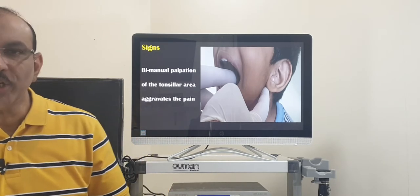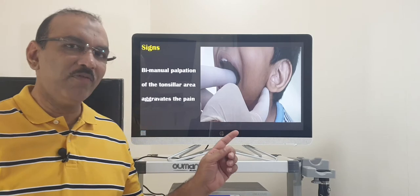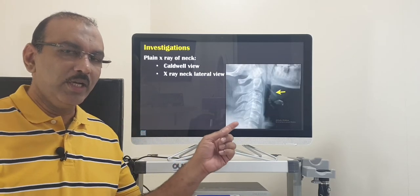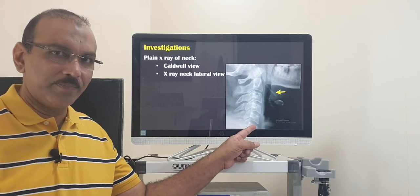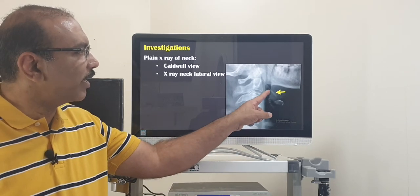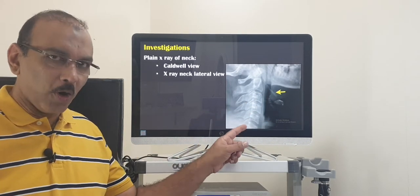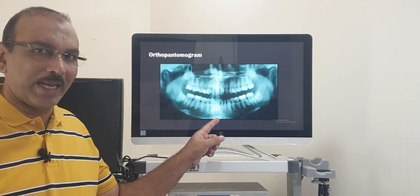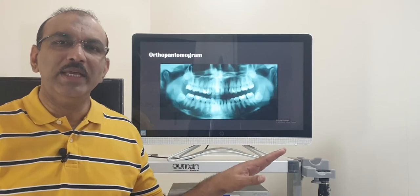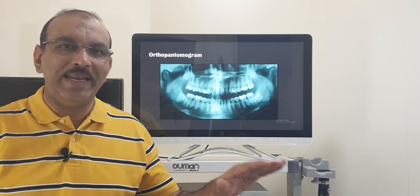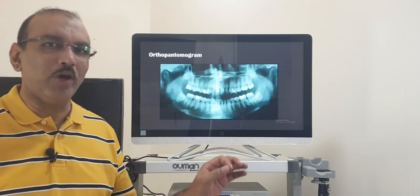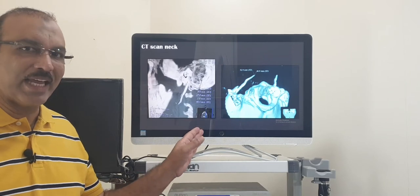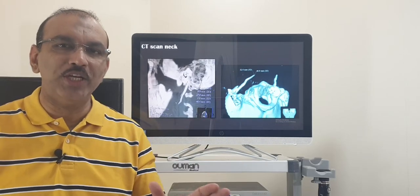Coming to the diagnosis, we can reconfirm the presence of the elongated styloid process by taking a simple X-ray of the neck, where you can see the elongated styloid process. Or we can do an orthopantomogram, which is usually done by the dentist at a dental center. The confirmatory imaging of choice will be a CT scan, which will show you exactly the angulation and the length of the elongated styloid process.